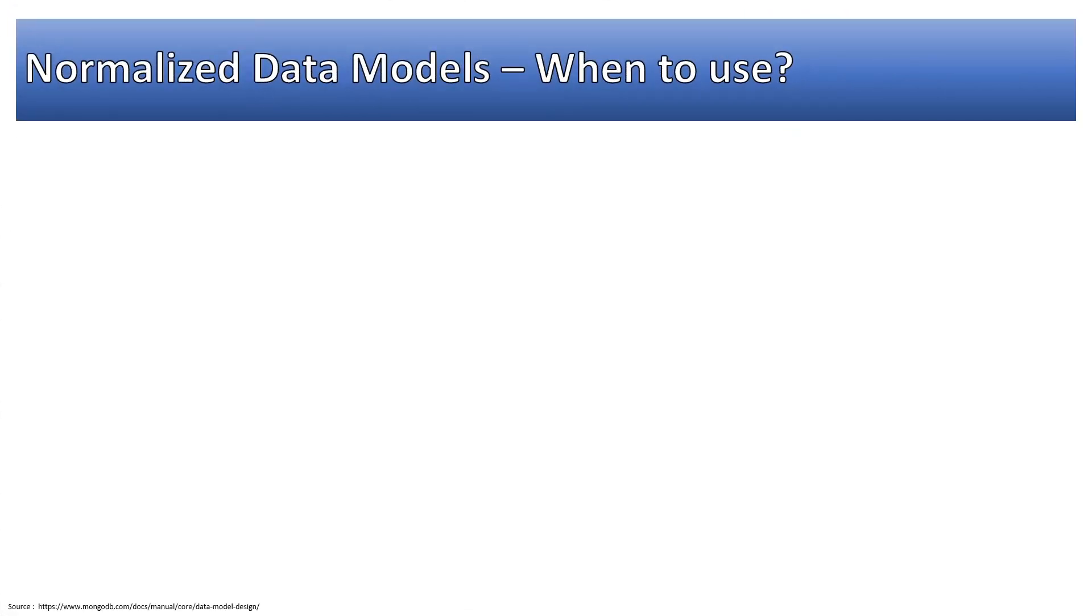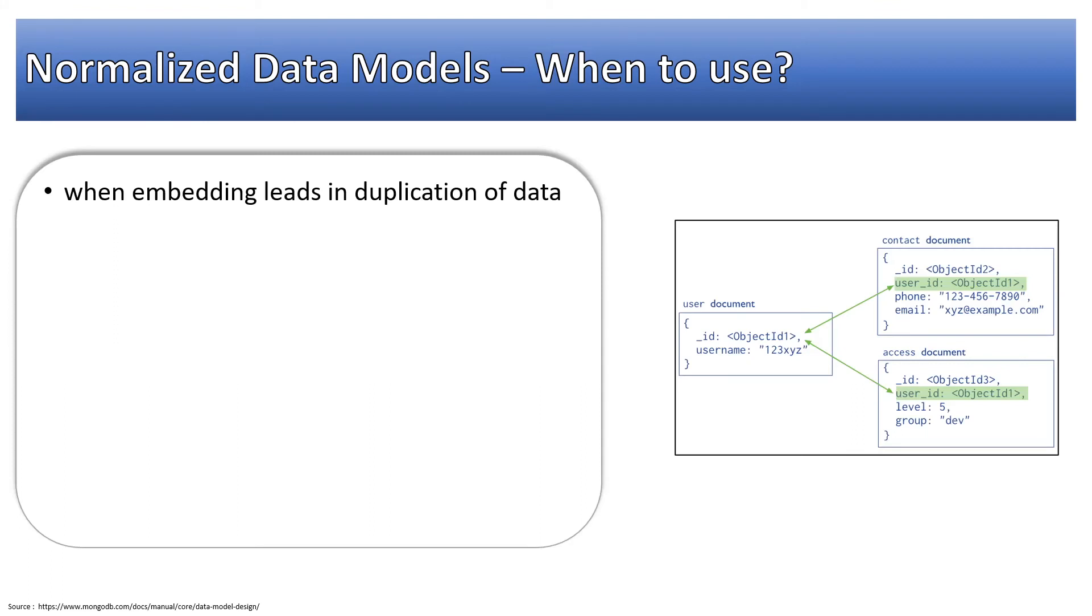Referencing, when to use it? When embedding leads to duplication of data. There could be the possibility that when you are going to embed the data, it will lead to duplication of data. To represent more complex many-to-many relationships.